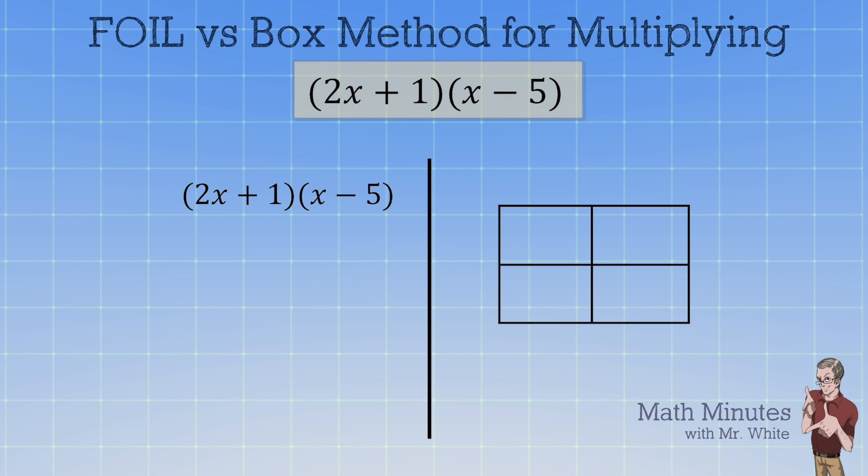Here we have (2x + 1)(x - 5). These are two binomials being multiplied so we're going to use either the FOIL or box method. On the left side of your screen you see the FOIL method all set up ready to go.